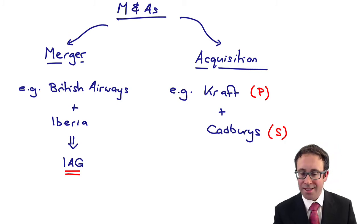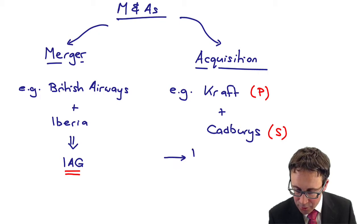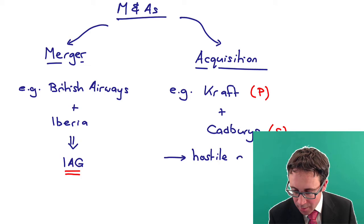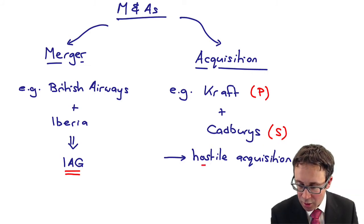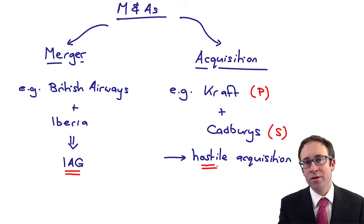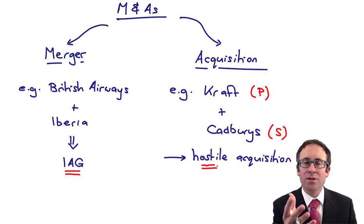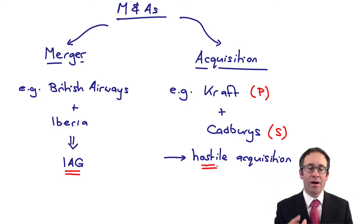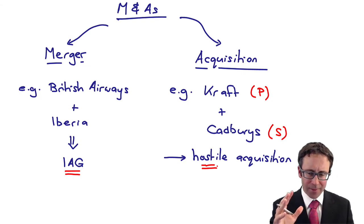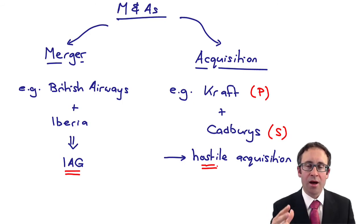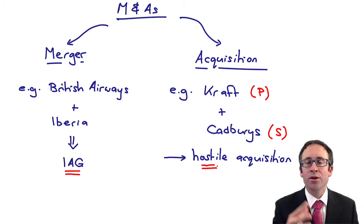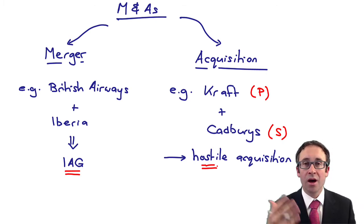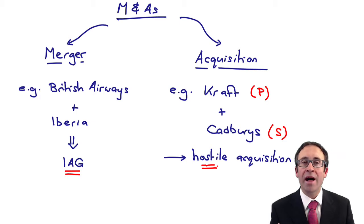The reason why I've used that as an example is because that was seen as an example of what's referred to as a hostile acquisition. That doesn't mean there's warfare between the two - quite literally, guns and tanks and military aircraft - none of that hostility. It's just whereby Kraft approached the shareholders of Cadbury's, but the directors of Cadbury's did not want to be taken over by Kraft. The reason why is maybe they thought that the offer was unattractive - that Kraft was undervaluing Cadbury's.